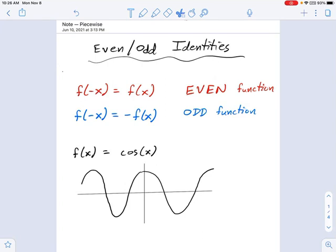Time for a new set of identities. We're going to be talking about these two identities called the even identity and the odd identity, and what they have to do with in trigonometry is whether trig functions are even or odd.